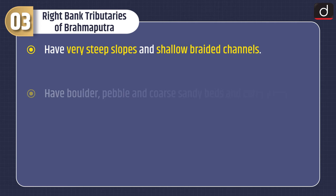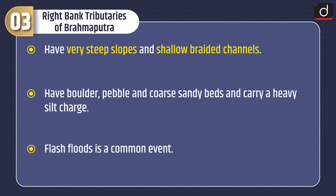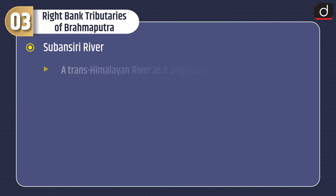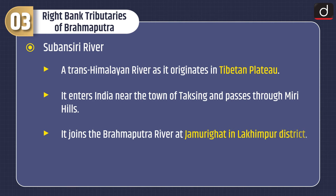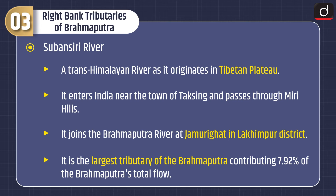Moving on to right bank tributaries of Brahmaputra: these have very steep slopes and shallow braided channels, with boulder, pebble, and coarse sandy beds, carrying a heavy silt charge. Flash floods are a common event. First is the Subansiri river — a trans-Himalayan river originating in the Tibetan plateau. It enters India near the town of Thaksingh and passes through the Miri hills. It joins the Brahmaputra at Jamuri Ghat in Lakhimpur district. It is the largest tributary of the Brahmaputra, contributing 7.92% of Brahmaputra's total flow.